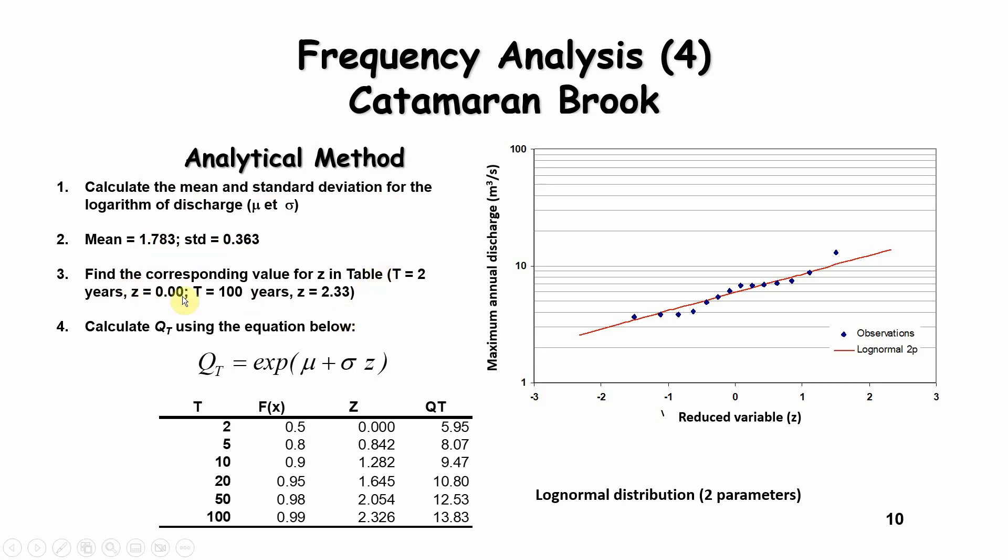In this case, I'm looking for recurrence intervals between 2 and 100 years. I know the f values, I know the z values, which I can calculate. And if I plug the z values, the mean and the standard deviation into this equation, Qt equals exp of mu plus sigma times z, then I can calculate the discharge Qt for the two-year flood, which would be 5.95, and the 100-year flood would be 13.83, for instance. This, again, is for the two-parameter log-normal distribution.